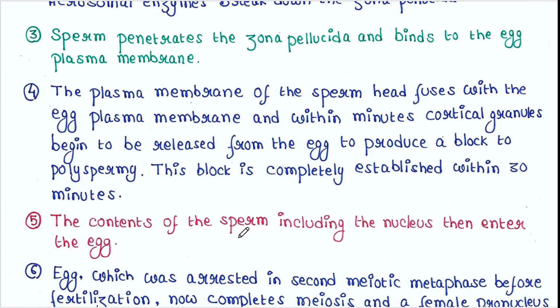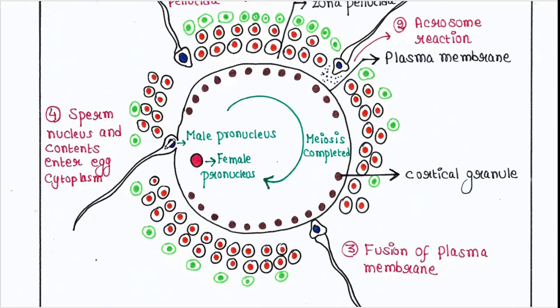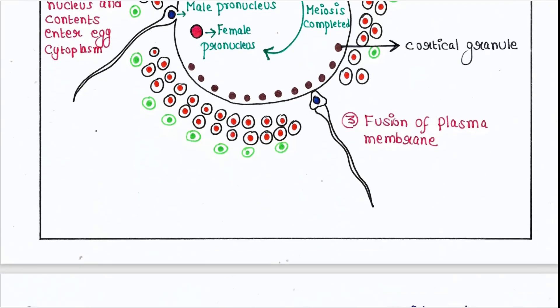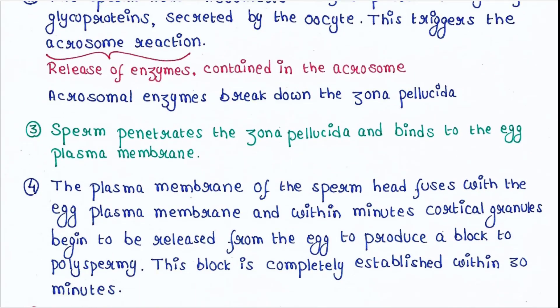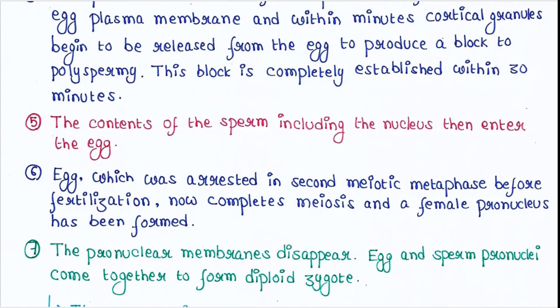The contents of the sperm including the nucleus then enter the egg cytoplasm. The egg, which was arrested in second meiotic metaphase before fertilization, now completes meiosis and a female pronucleus has been formed.